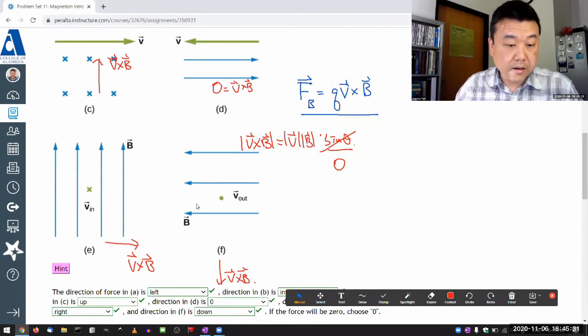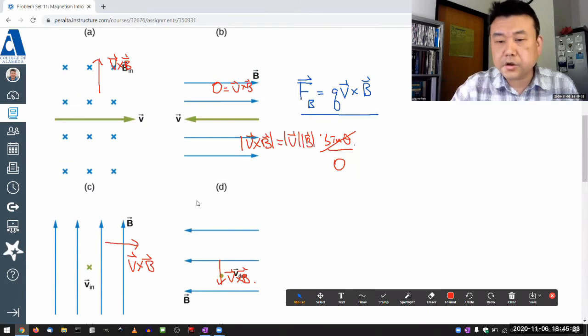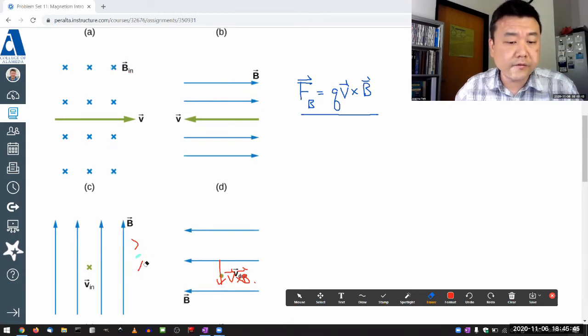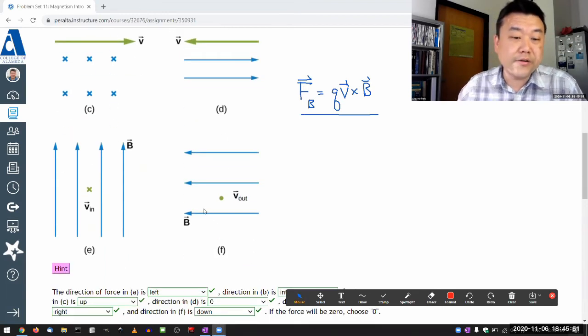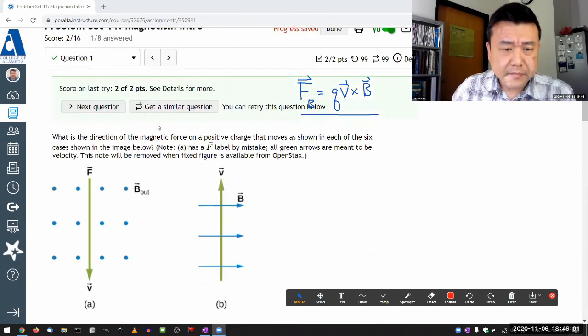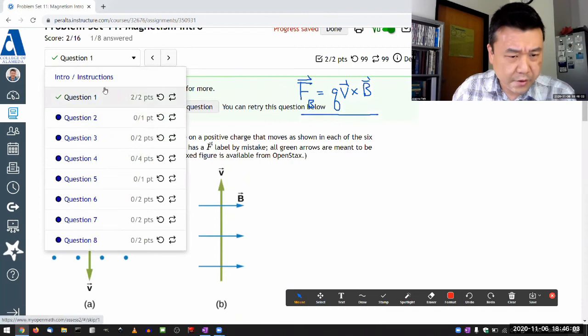You will see this application more next week as we derive magnetic fields from Biot-Savart's law. And the whole thing is just another set of applied cross product. So good. I hope all of this makes sense. Let me keep going with the other questions.